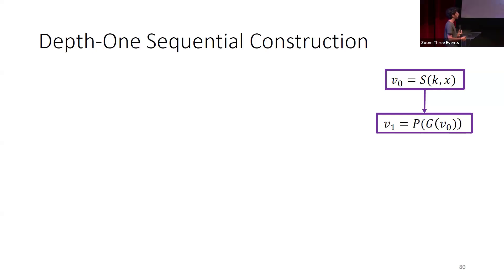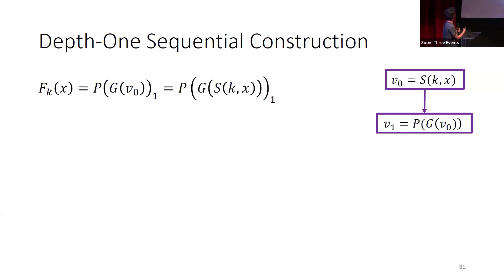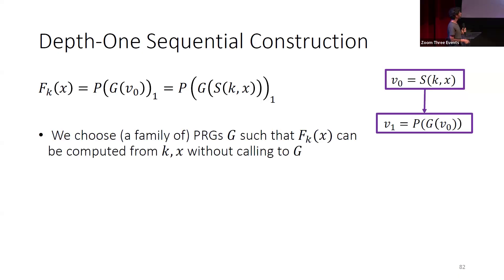To show the ideas for ruling out a depth-1 sequential construction — calling the PRG once with a single post-processing function — I'll assume the output of the PRF is one bit, making the lower bound stronger. The PRF on input x: compute function S of K and X, apply the PRG, apply the post-processing function P, and output the first bit. We will choose the PRG such that we can compute the value of fk on point x from k and x without calling G at all. This means we can break the PRF without breaking G, since the PRF is independent from G.